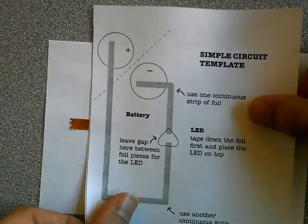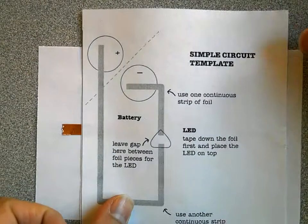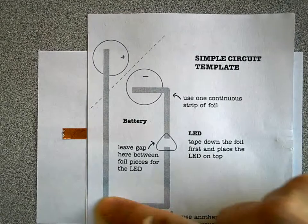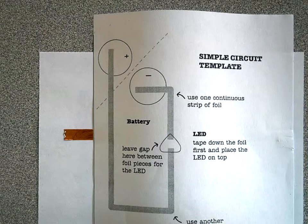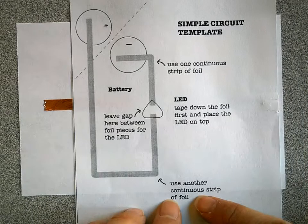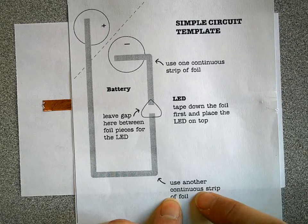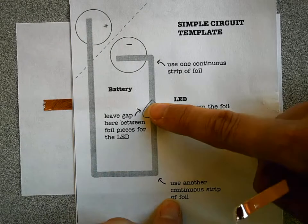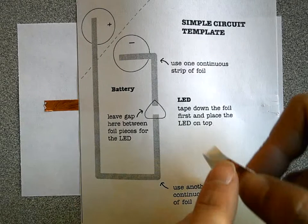Where people run into more problems is when they try to go around a corner. On some of your templates you have corners like this, and the best way to go around that corner - notice it tells you continuous strip of foil - don't try to do a straight piece and another straight piece because the adhesive on the bottom is less conductive.